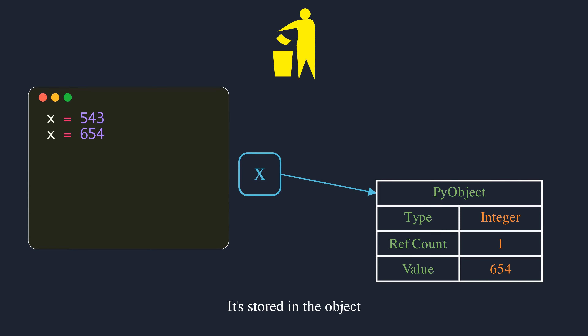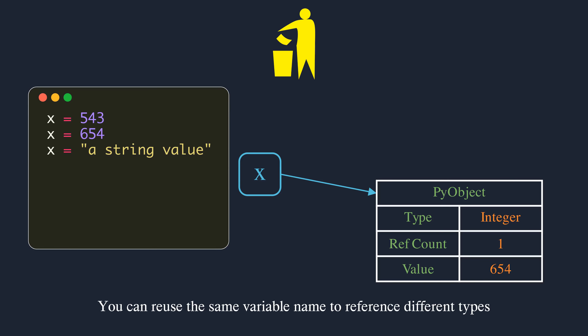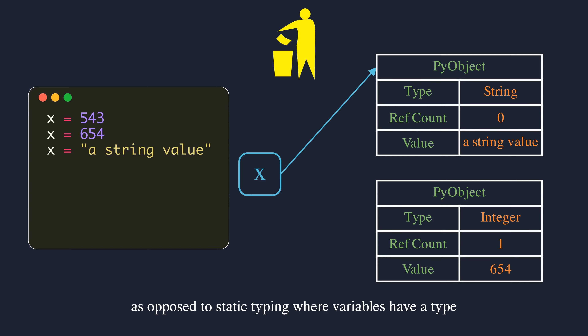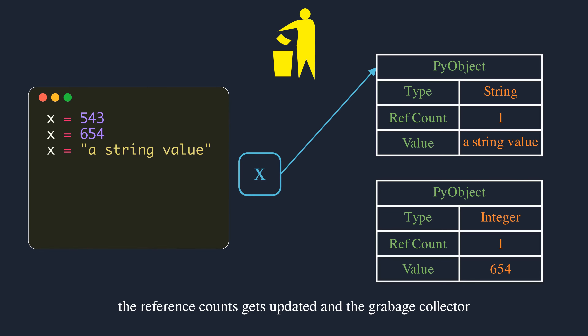Python's memory manager periodically cleans objects with zero reference counts — this process is called garbage collection. Notice that the type information is not associated with the variable; it is stored in the object. You can reuse the same variable name to reference different types like integer, string, etc. This is why Python is said to be a dynamically typed language. Dynamic typing means that runtime objects or values have a type, as opposed to static typing where variables have a type.